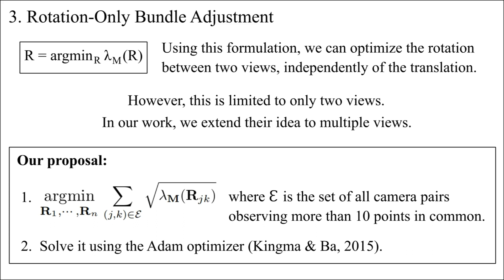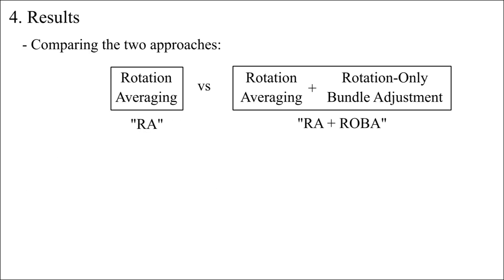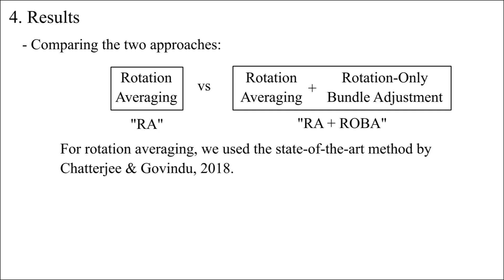To evaluate our method, we compared two approaches. One is rotation averaging, and the other is rotation averaging followed by ROBA. For rotation averaging, we used the state-of-the-art method proposed by Chatterjee and Govindu in 2018.